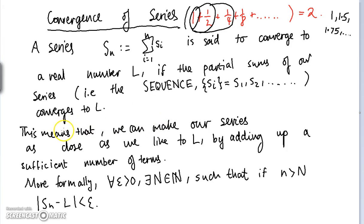We learned already what the definition of a sequence converging means, and so the definition of a series converging is no different. It's just that we take the sequence of partial sums of our series. Formally, this means that we can make our series as close as we like to L by adding up a sufficient number of terms.